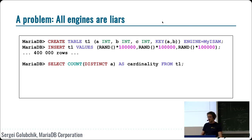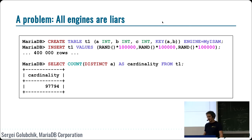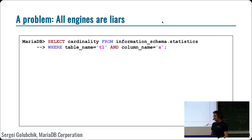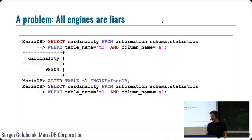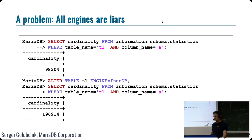The exact count is slightly less than 100,000, which is what one would expect. And the storage engine estimation of how many different values there are — the engine does its magic, calculates approximately the number, and gets something very similar. That's good — this is MyISAM. But if I alter the table to InnoDB and repeat the same test, InnoDB says there are about 200,000 distinct values in the column, while all values are integers between 0 and 100,000. That's technically impossible.